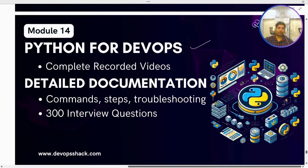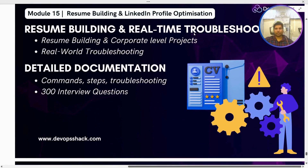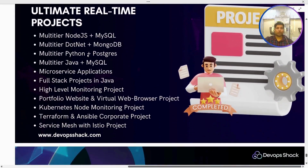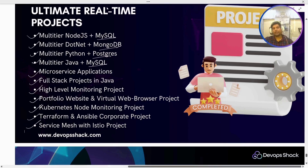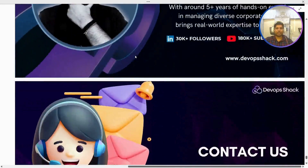We'll also cover resume building and real-time troubleshooting — the kind of tasks that are good to add to your resume, which projects are useful for freshers and experienced professionals, and how to explain those projects. The course projects include four multi-tier projects with a database tier, a microservice application, a Java-based full-stack application, a high-level monitoring project, a simple portfolio website, a virtual web browser project, a Kubernetes node monitoring project, a consolidated Terraform and Ansible project, and a service mesh project.